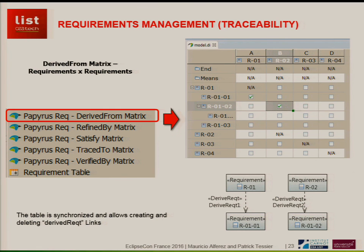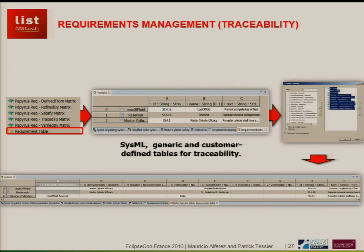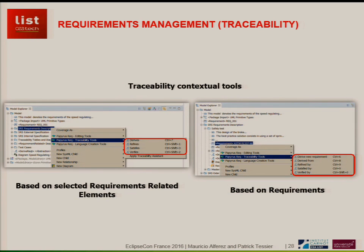You can also create different kinds of metrics — derived from, refined by, satisfied by, verified by — so it is very easy. We also have a generic requirements table where we can select and present all kinds of relationships of a requirement, and it is very customizable. There are also contextual assistants that help you, according to each type of model element, understand how the model element can be linked to other things in your system.